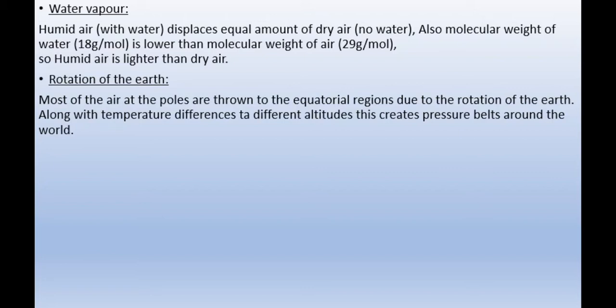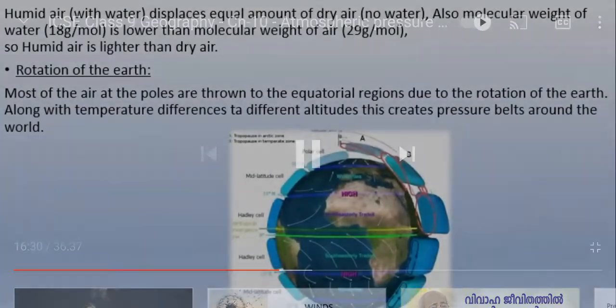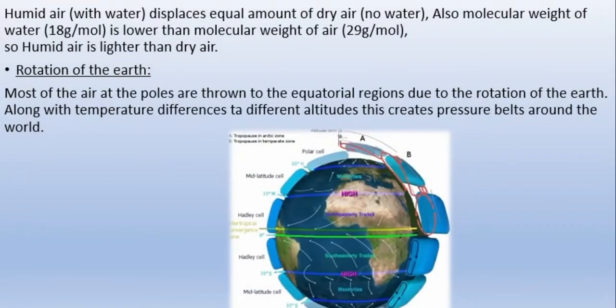Most of the air at the poles is thrown to the equatorial regions due to the rotation of the earth, along with temperature differences at different altitudes. This creates pressure belts around the world. Pressure belts change because of earth's rotation — temperature changes from the equatorial region to the polar region, and as a result, pressure also changes.